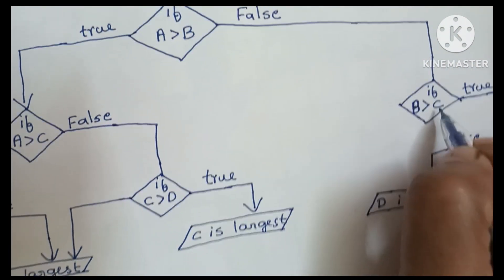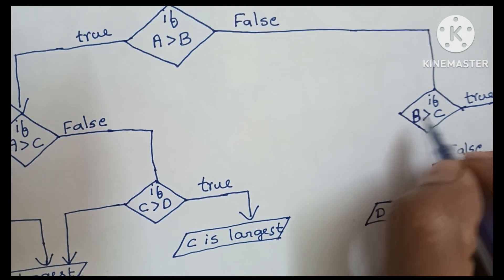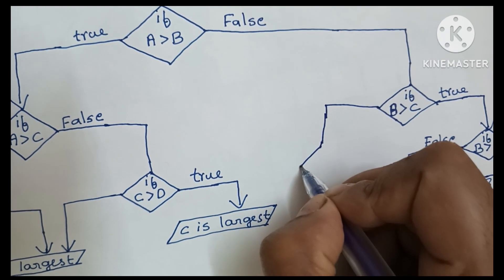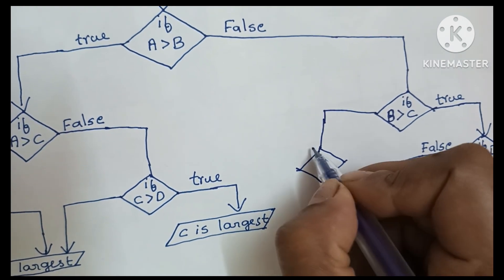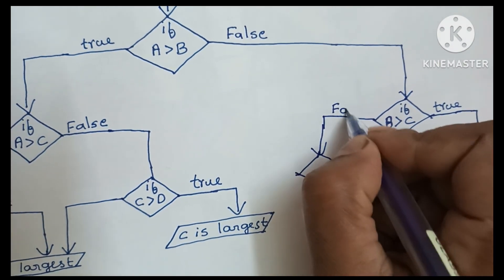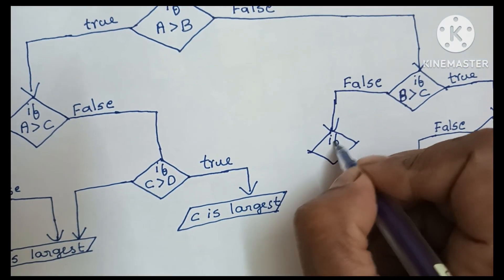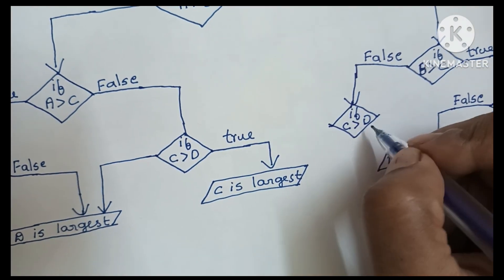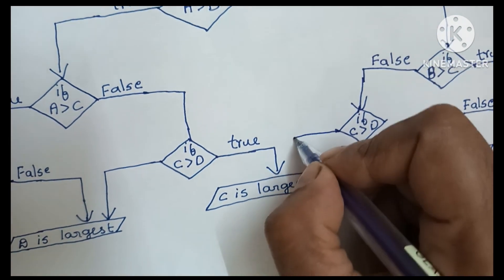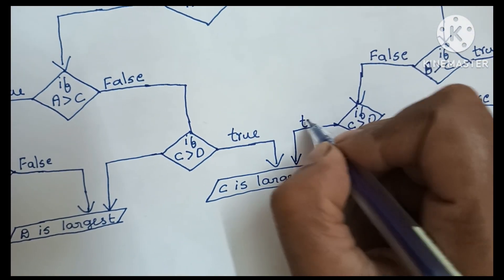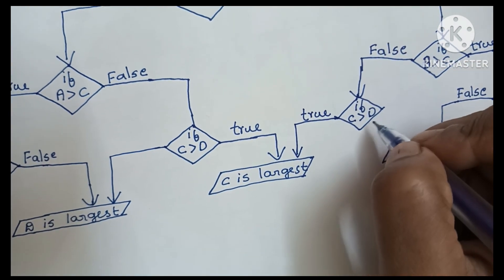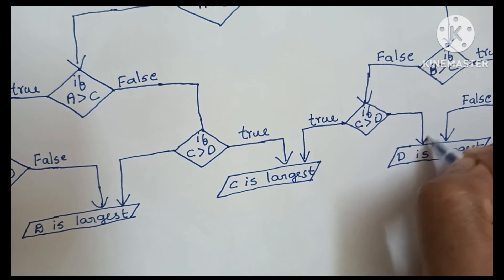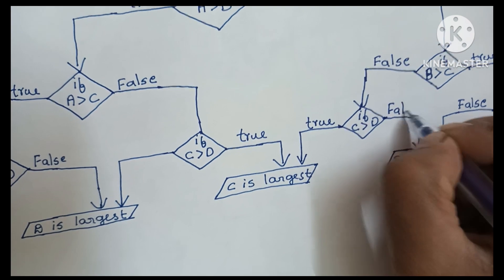If B greater than C is false, then C is greater. We then compare C with D. If C is greater than D, this condition is true and we print 'C is largest'. In case this condition is false, we print 'D is largest'.